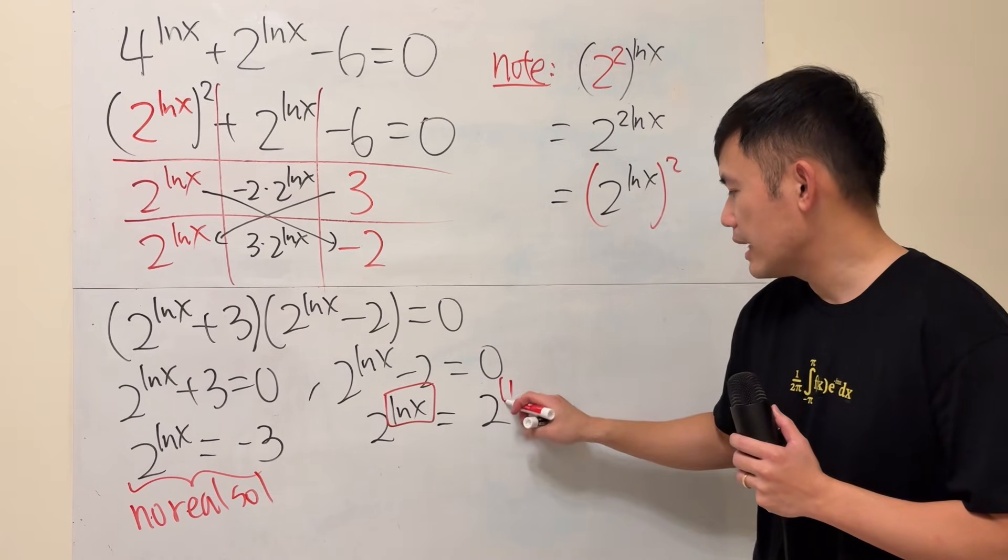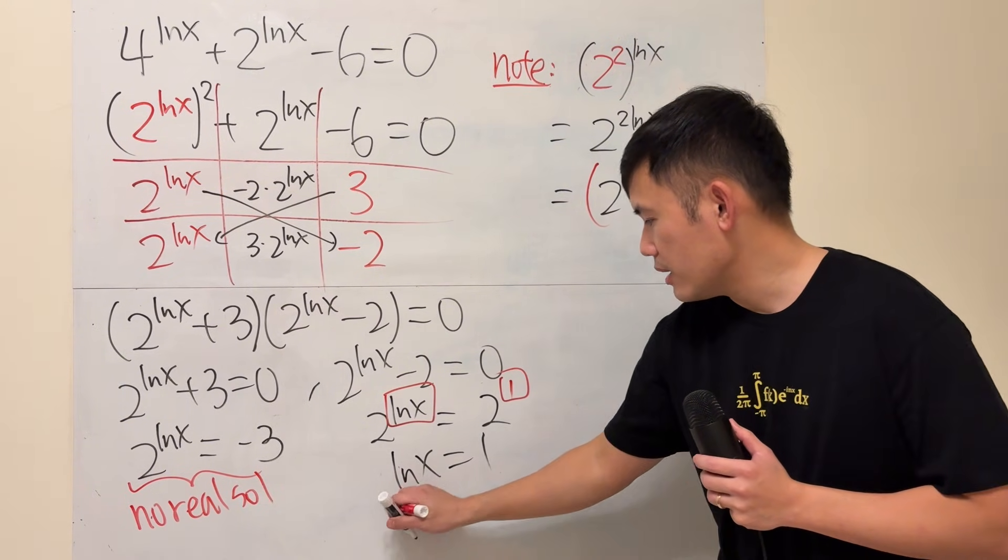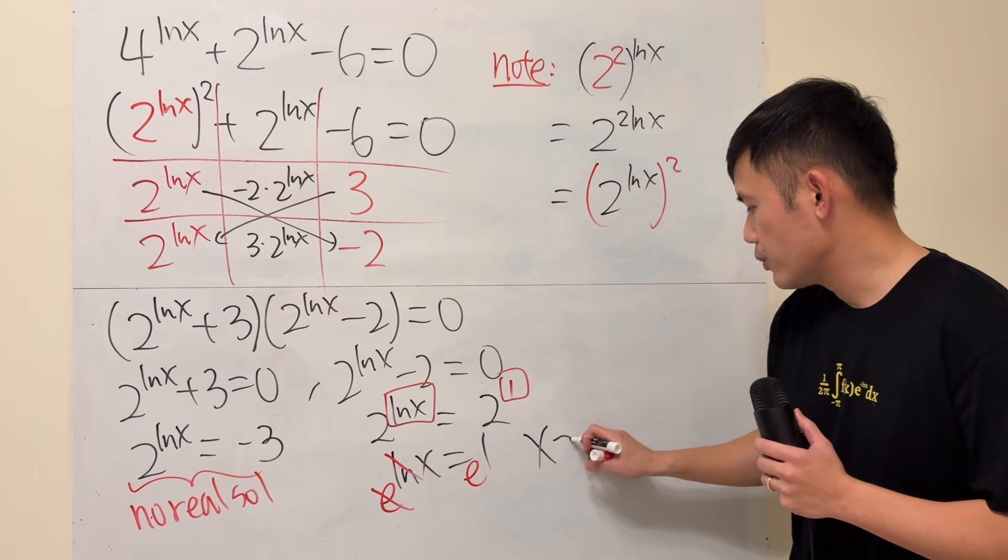So, that means the exponents have to be equal. So, we just have to consider ln x being 1. And then, we can do e to this power and e to that power. So, x is just equal to e.